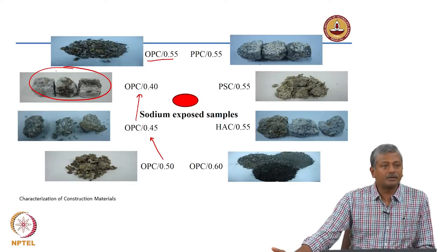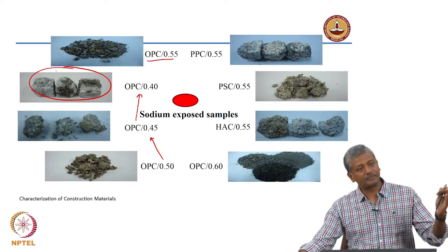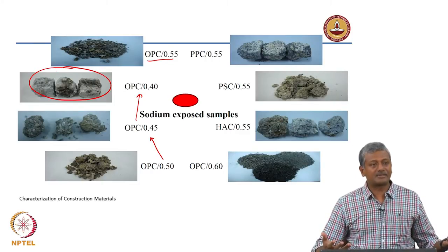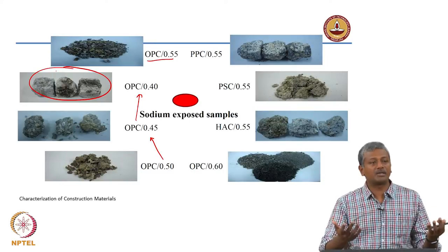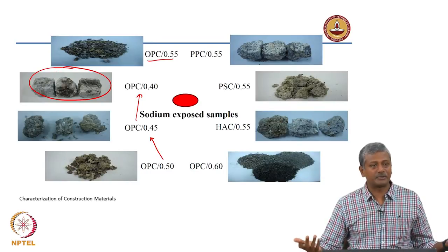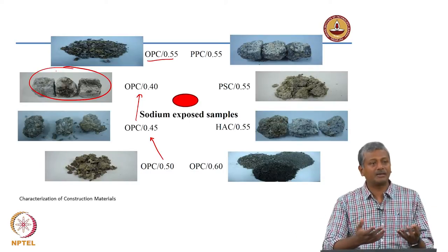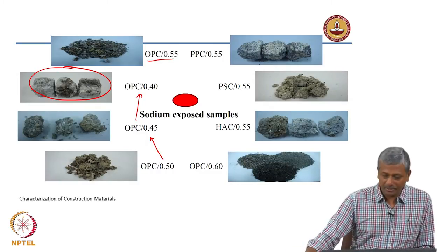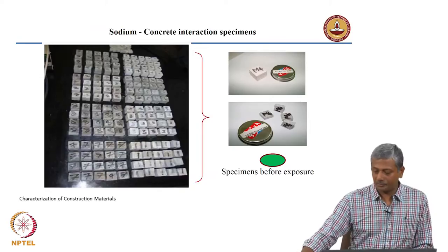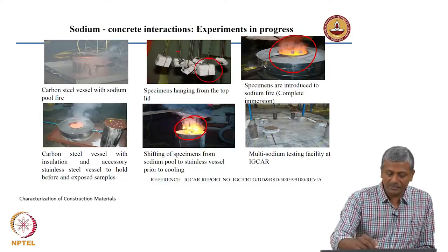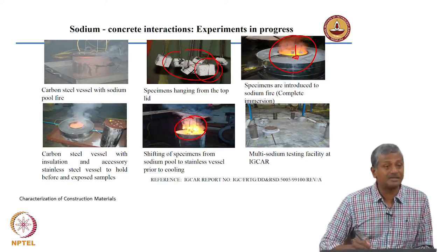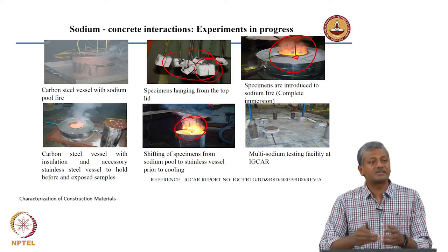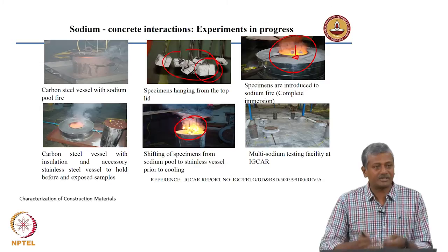In a real nuclear accident, when the liquid sodium actually spills from the pipes there will be air in the system, so when it comes in contact with air it will create a fire. Liquid sodium in contact with air at 550 degrees Celsius will result in a fire. The specimens are being inserted into this vessel which has liquid sodium at 550 degrees Celsius, but since it is open to the atmosphere it is catching fire.